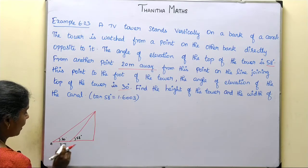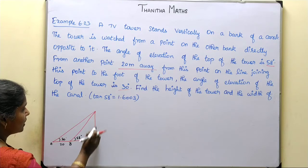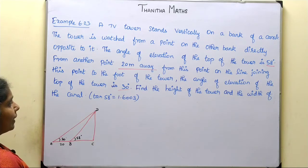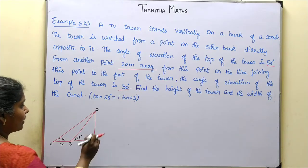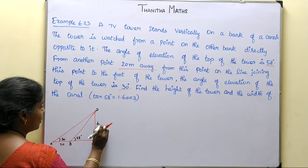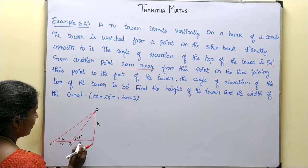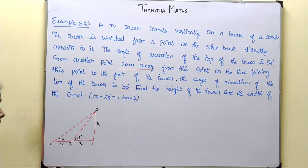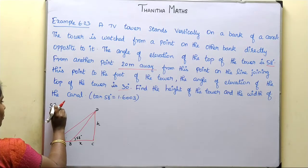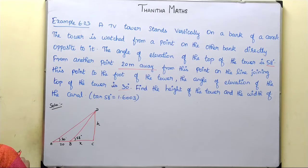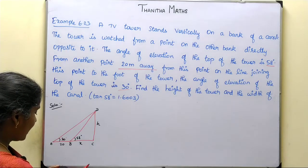Let the points be A, B, C, D. We need to find the height of the tower and the width of the canal, so the width is BC. Since we have the data, we can form two triangles. We don't know any full values yet.